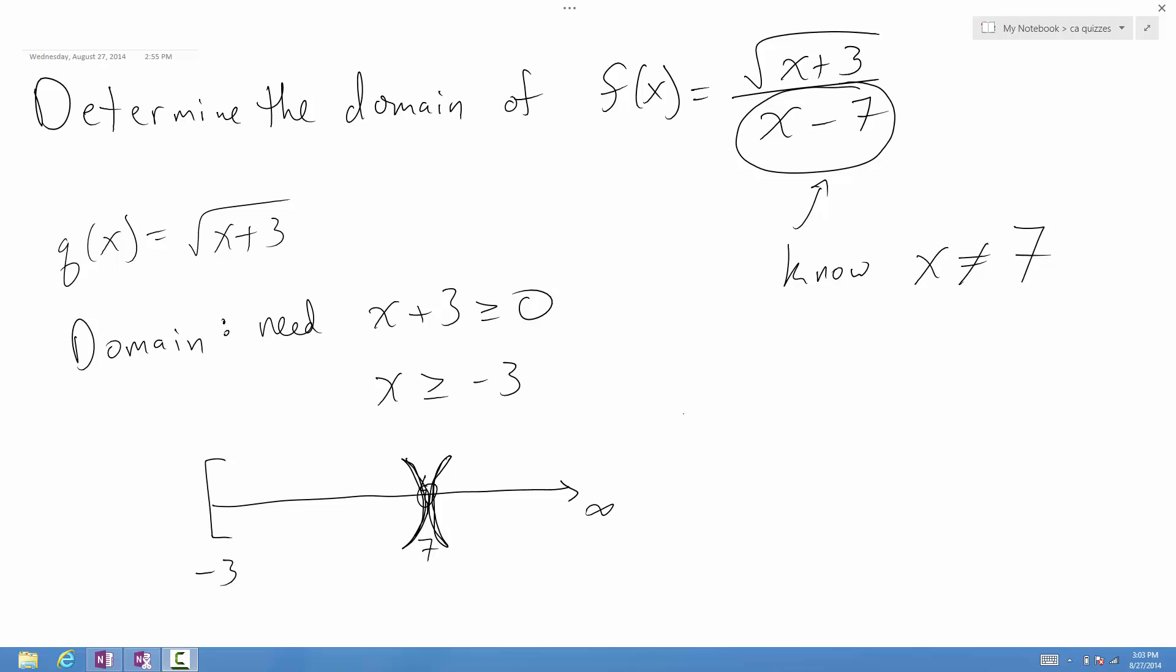So then the domain of this function is negative 3 to 7, union 7 to infinity. And that's in interval notation. All right, hope this helps.